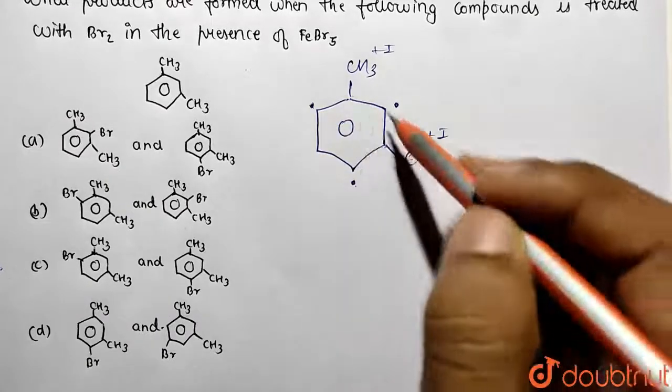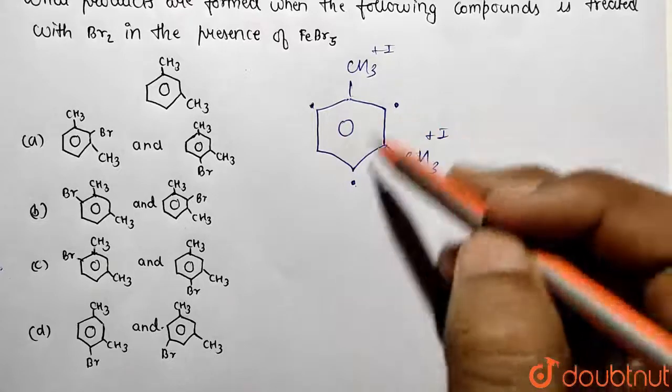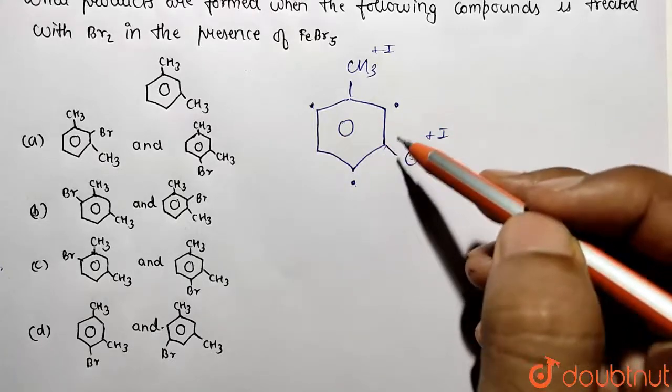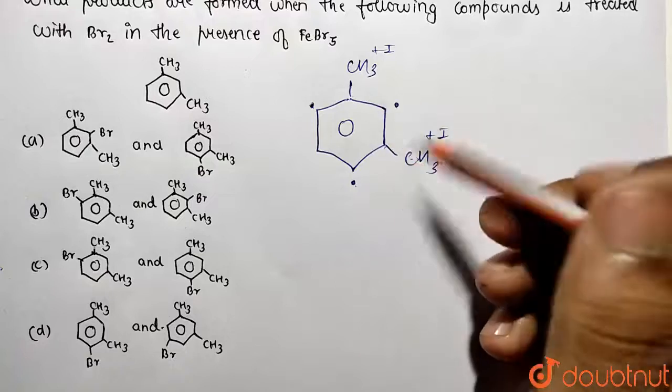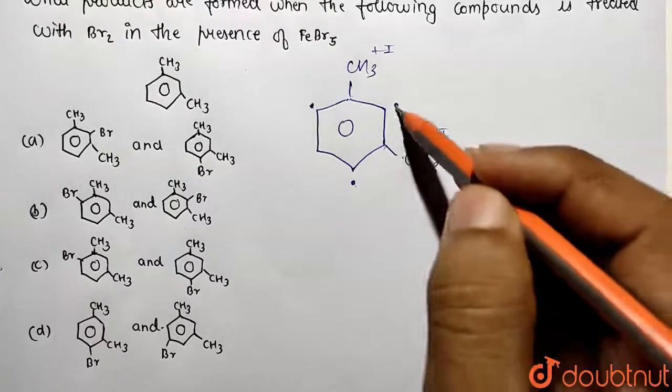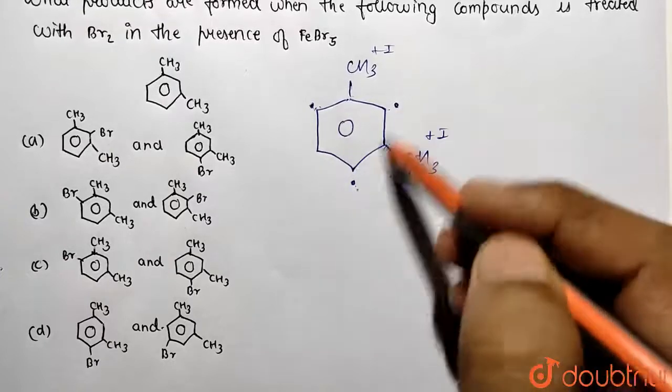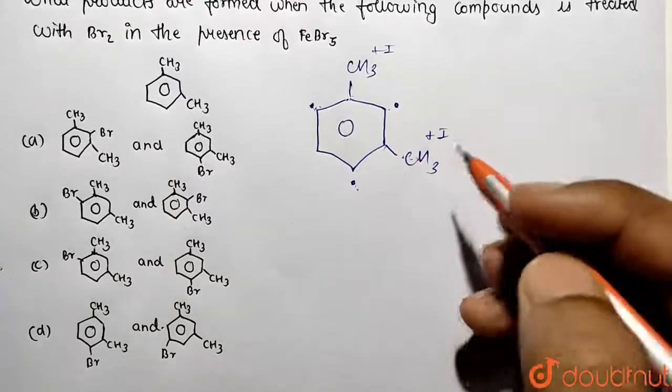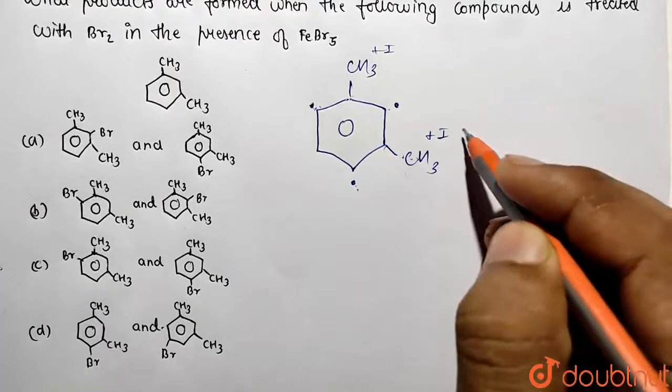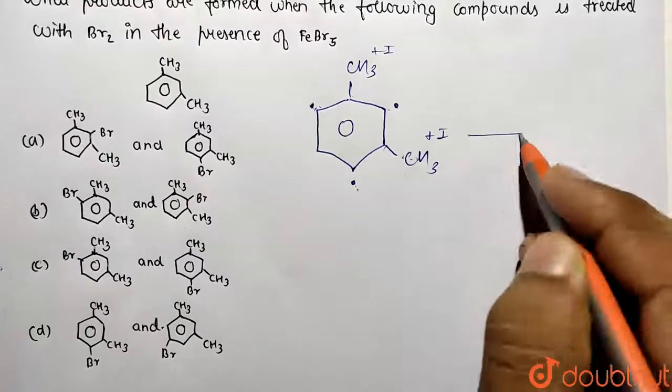Both groups are going to generate the identical pair of products because they are related with respect to their configuration. For this, ortho and para positions are these, and for this one, ortho and para positions are these. They are going to generate the identical compounds. Let's perform the reaction and see what they are going to generate.